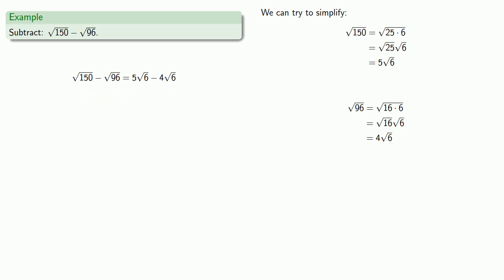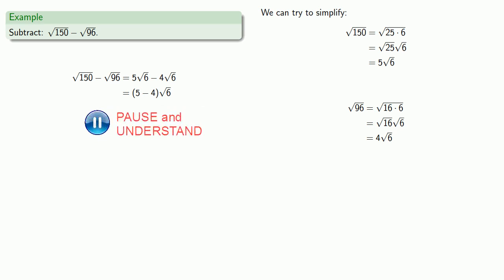So I have 5 square roots of 6, and I'm going to remove 4 square roots of 6. So I'll have 5 minus 4 square roots of 6, otherwise known as 1 square root of 6.